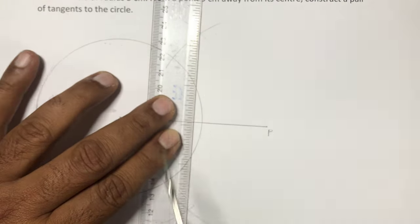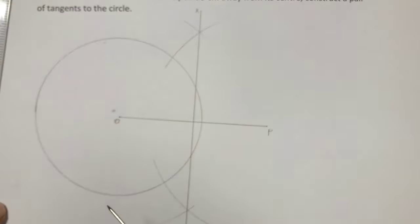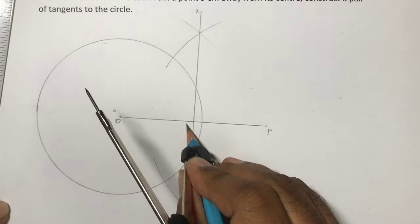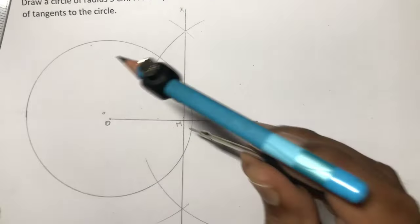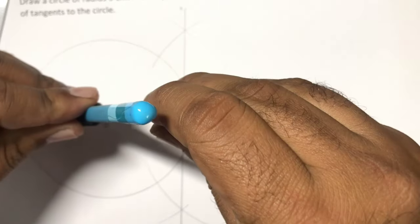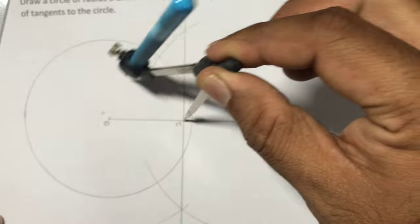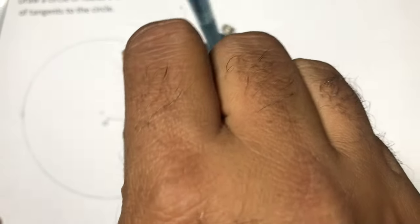You can name it as perpendicular bisector, you can do it XY. And wherever it cuts OP, that you can mark it as M. Now with MO or MP as radius, you need to draw a circle with MO or MP as a radius.